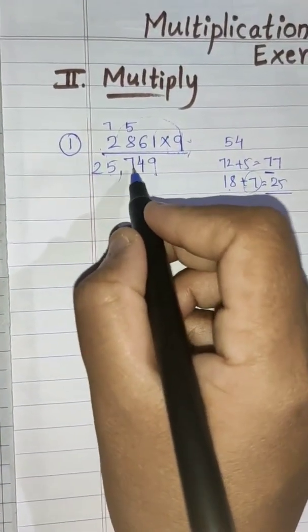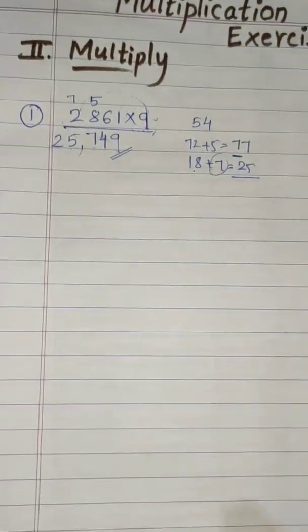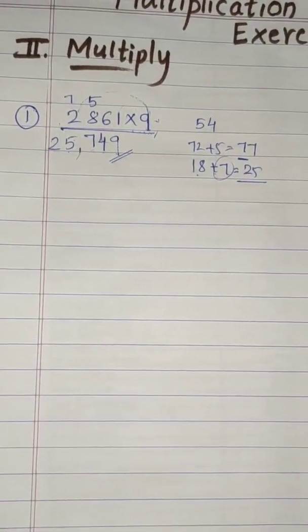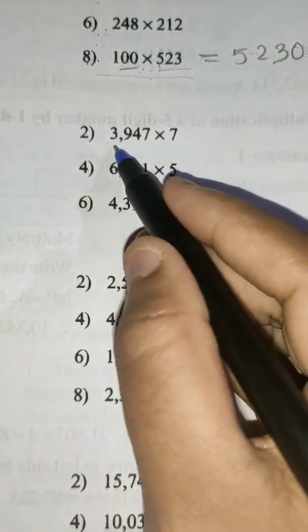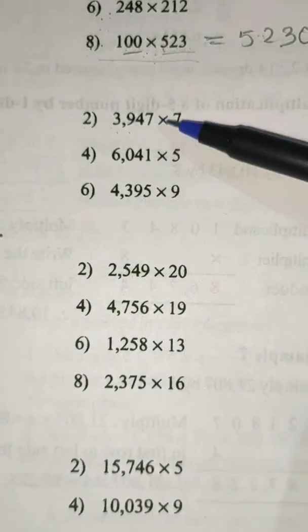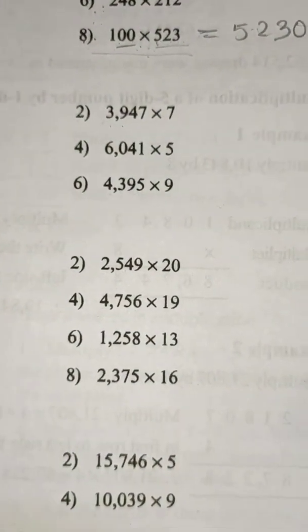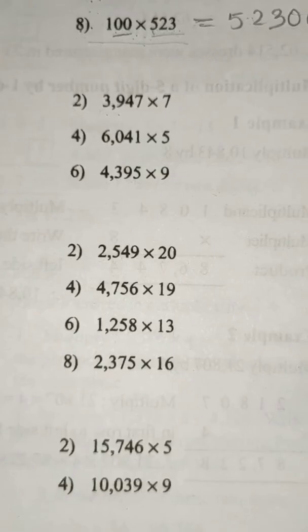25,749 is the right answer. Now we'll take one more example — the second one: 3947 into 7. I'll write the same example here. Children, try to do it by yourself — take your pen and pencil and try to do it with me. 7 sevens are 49.